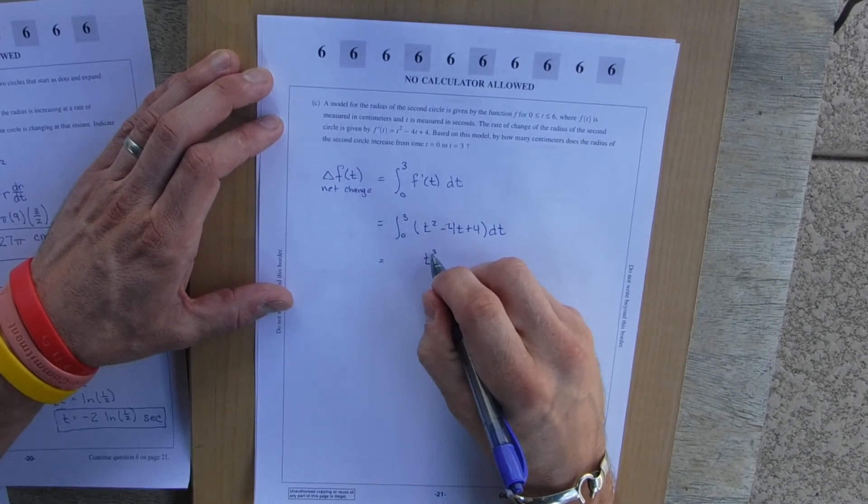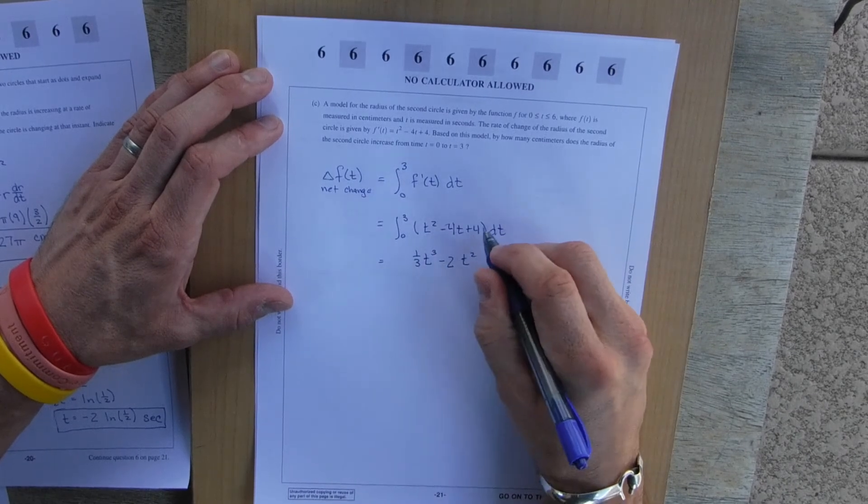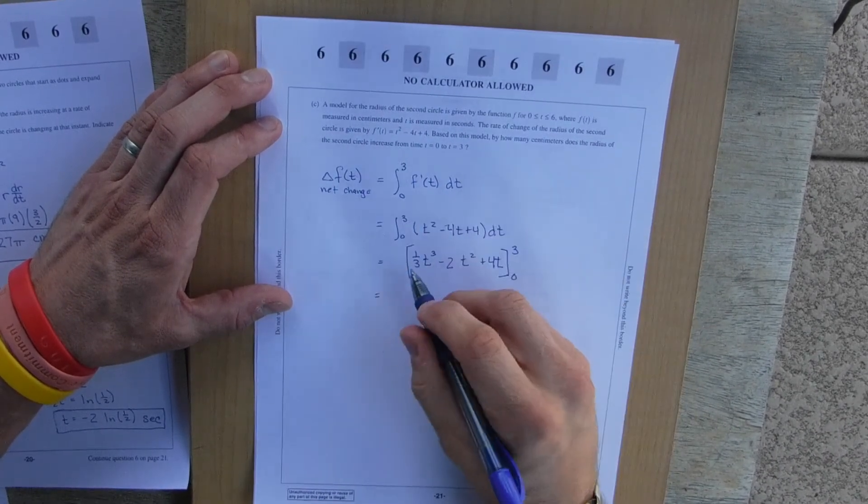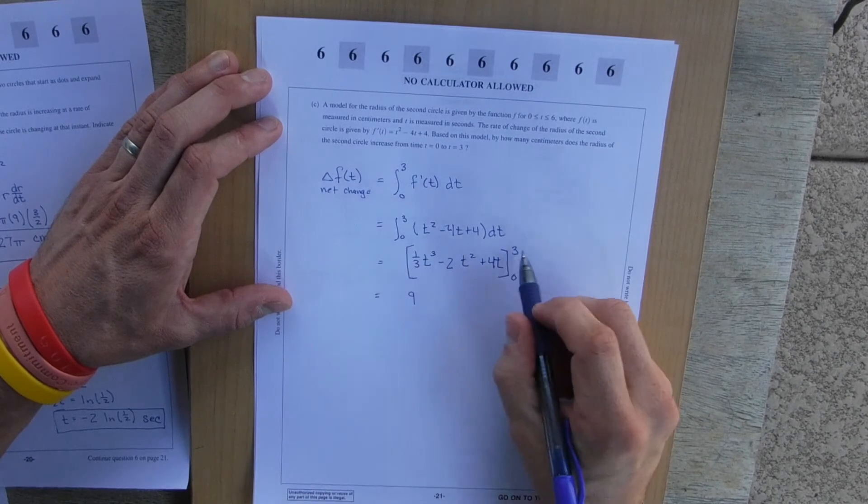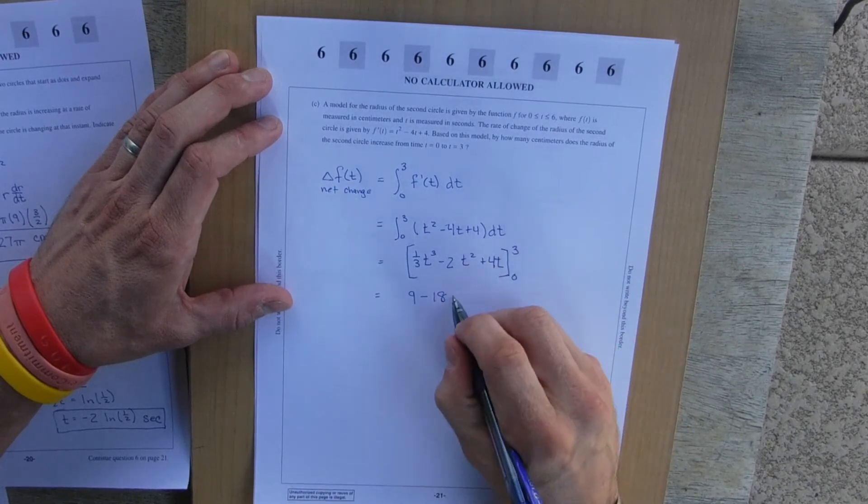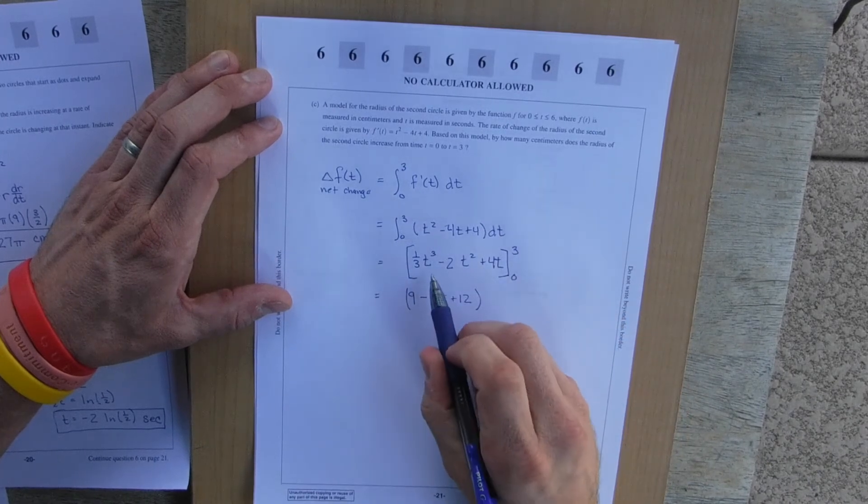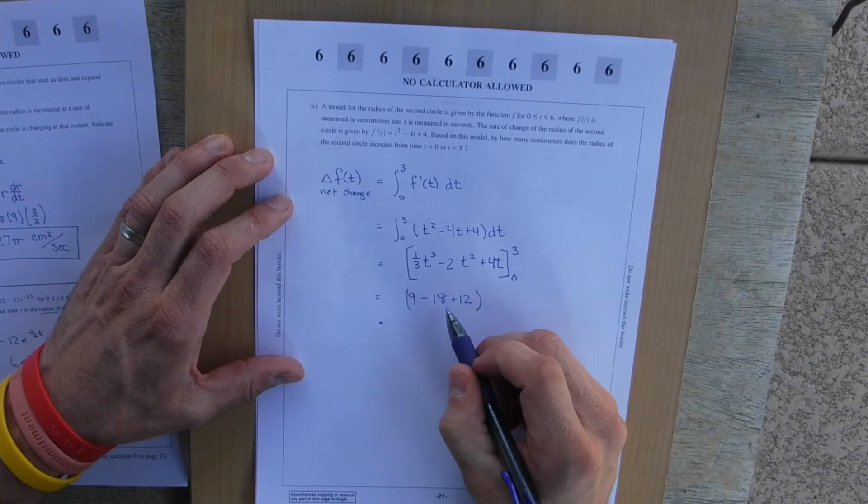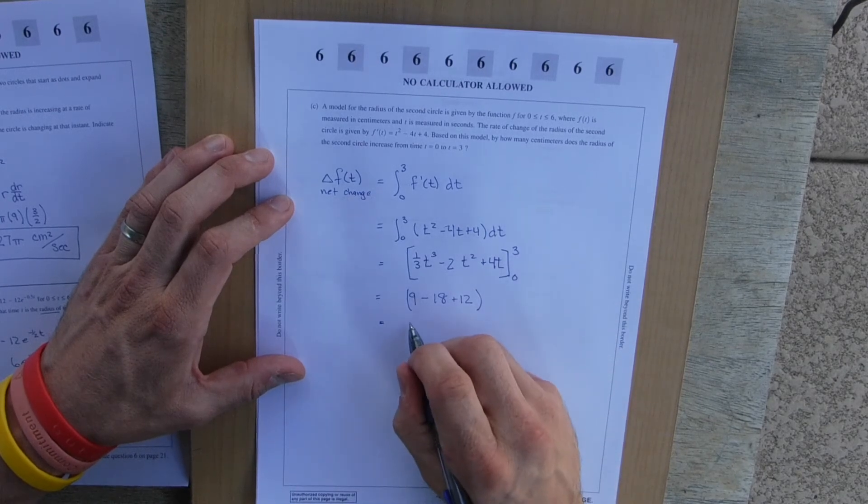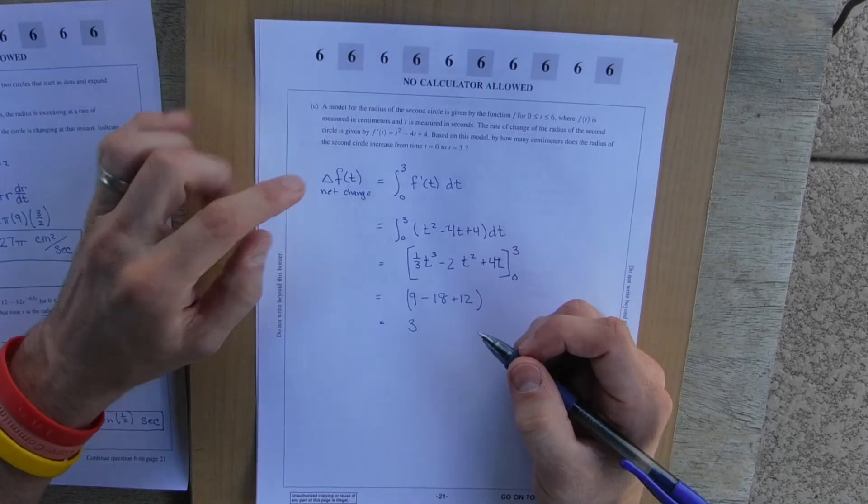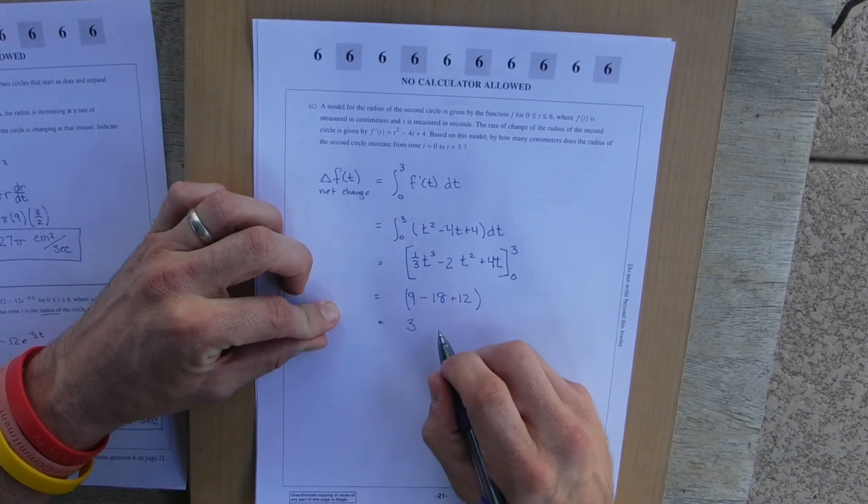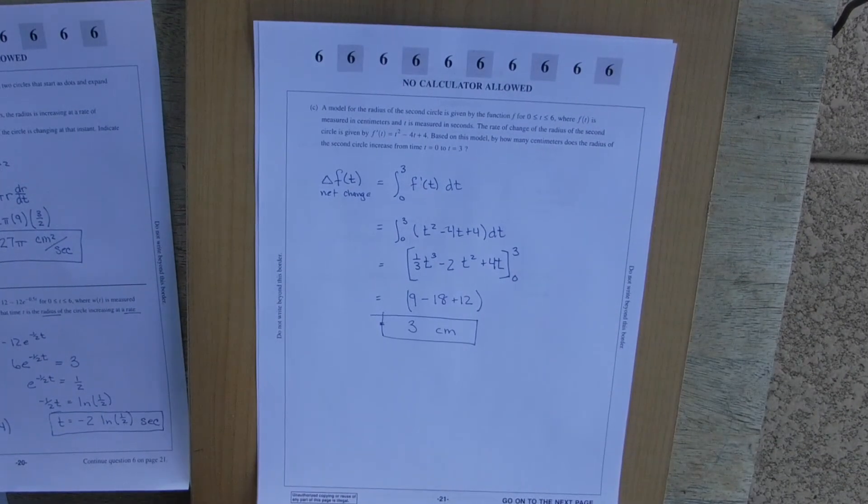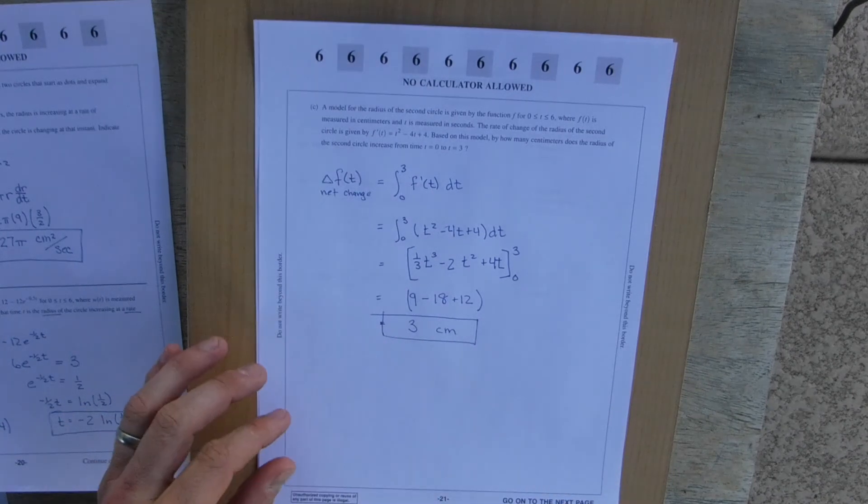So this would be integral from 0 to 3 of t² - 4t + 4 dt. Integral time, t³, one-third. t², one-half. 4t. Okay, no plus C because this is a definite integral. Plugging in the 3: 27 divided by 3 is 9, 3 squared is 9 times 2, negative 18, 3 times 4 is 12, so that's the 3. Zero is 0, 0, 0, so minus 0 in this situation. And so this is going to be 9 minus 18, negative 9, negative 9 plus 12, 12 is bigger by 3. And so this is the net change in the radius. And so this is going to be in centimeters. So based upon this model, how many centimeters does the radius of the second circle increase from 0 to 3 seconds? 3 centimeters.